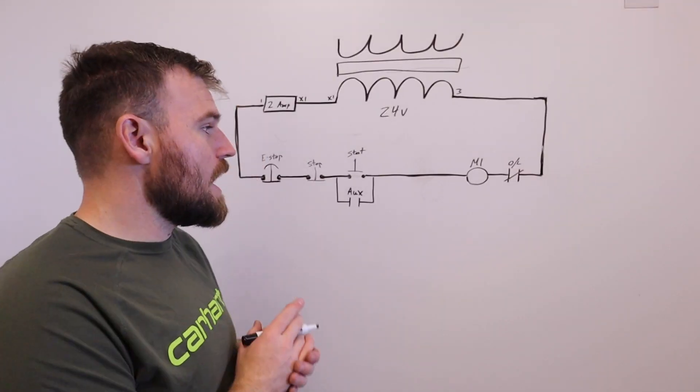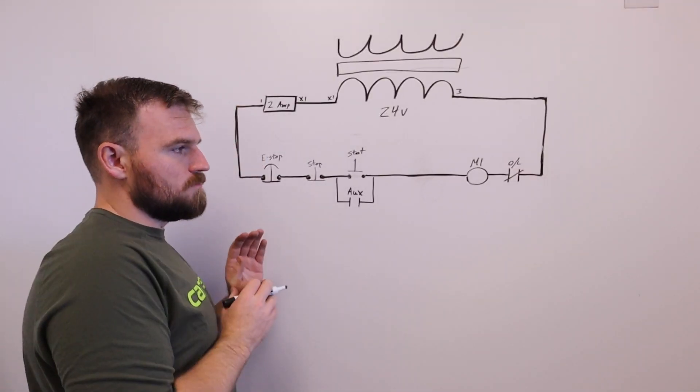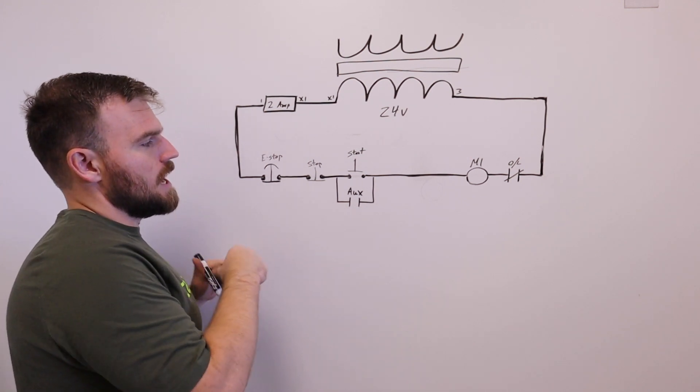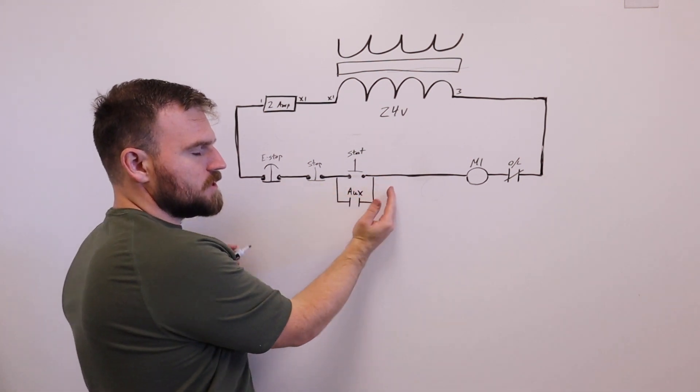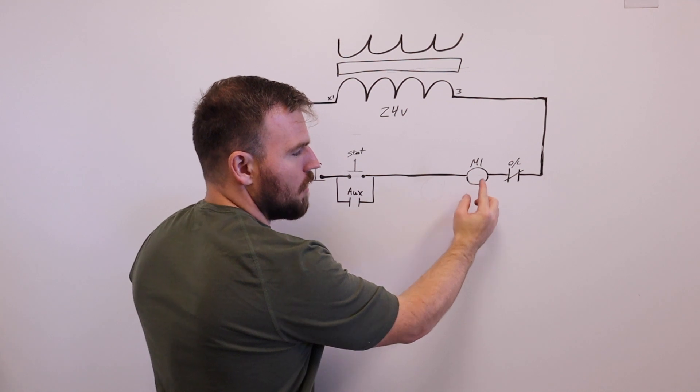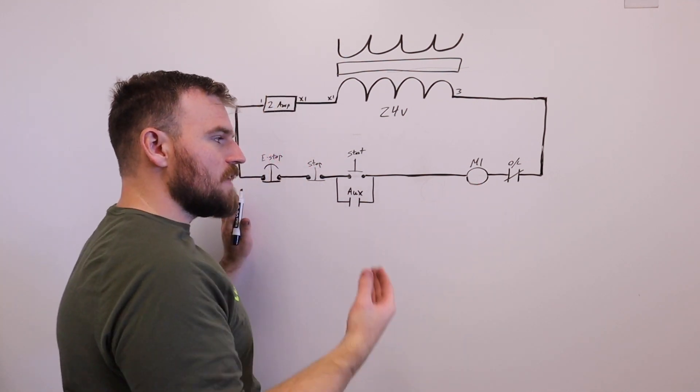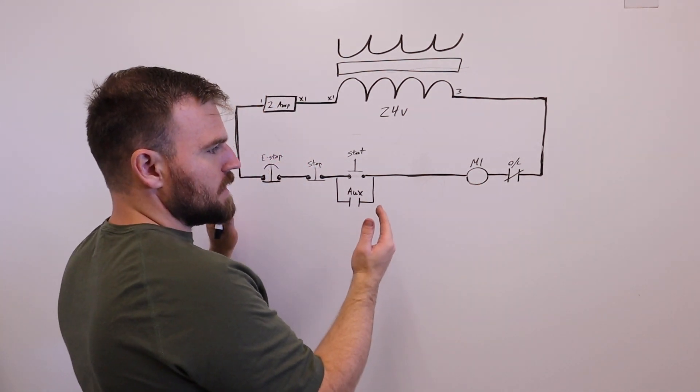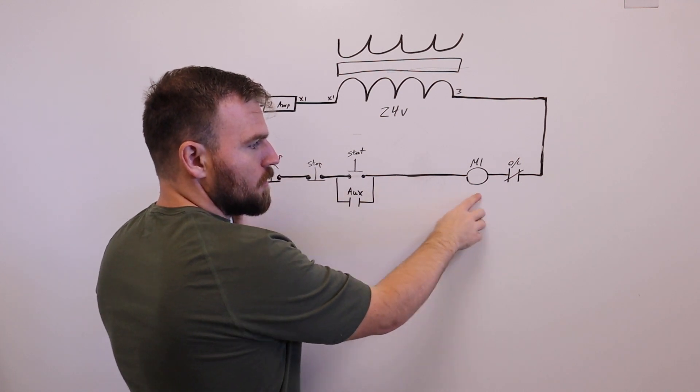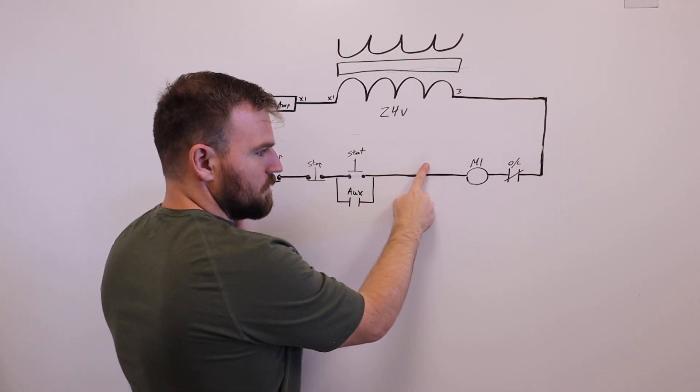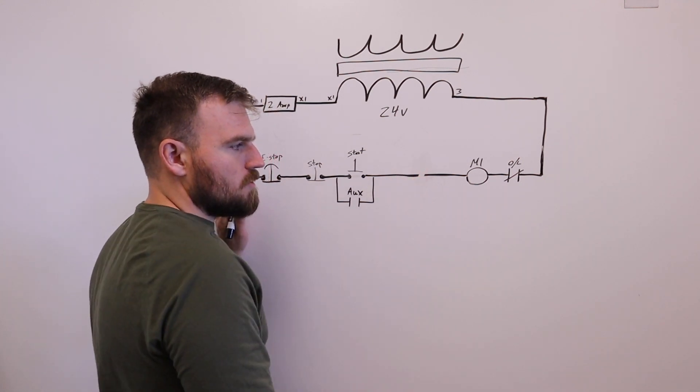Alright guys, so what I have here is just our typical motor control, and obviously how this one works is the power is going to flow through these switches and make it all the way to our motor control. So effectively what we need to do is find a way to cut the power going to our motor control.